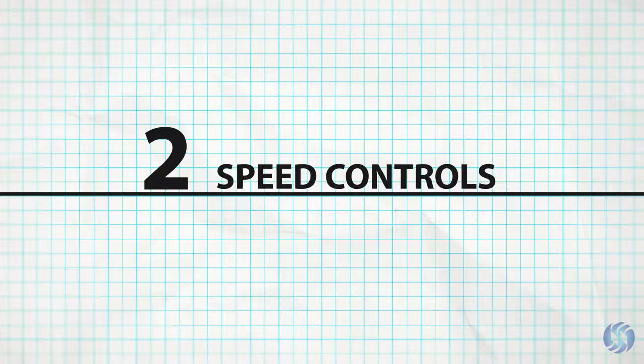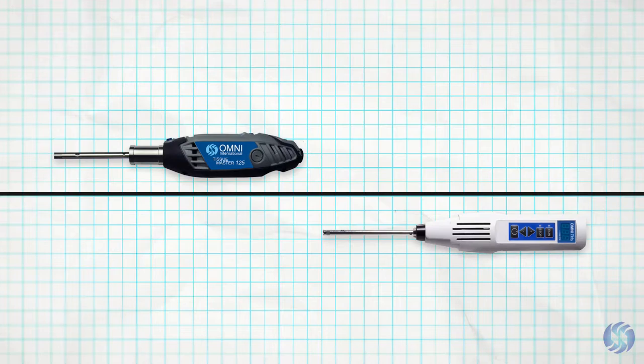the next critical factor is determining if analog or digital speed controls are desired. Choose the homogenizer model that works best for your lab's applications.